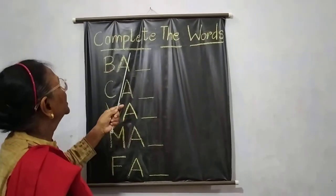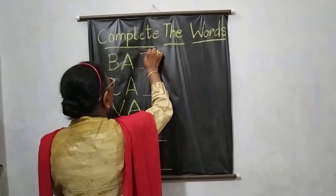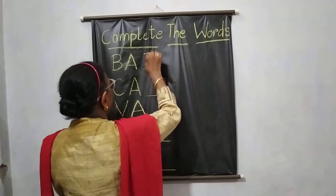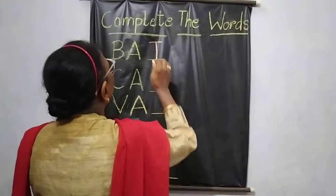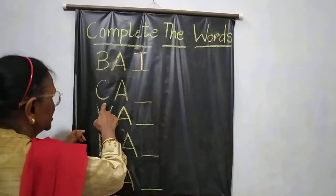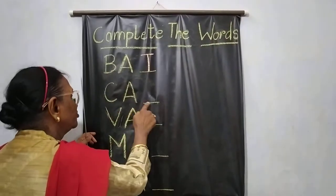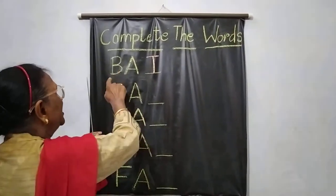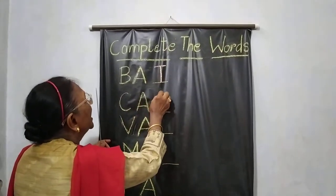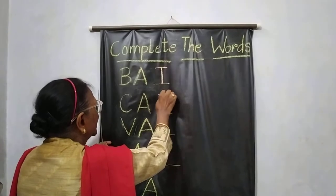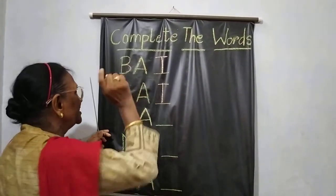B-A-T. So you will write here — T, capital T. B-A-T. This is complete; this is incomplete. So we have to complete these words. B-A-T — you put a T there. Next one: C-A — again T, children. Cat. Again T comes. You write that T there.